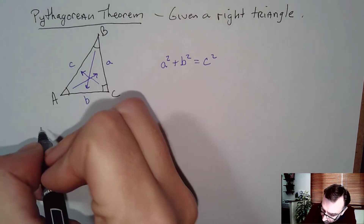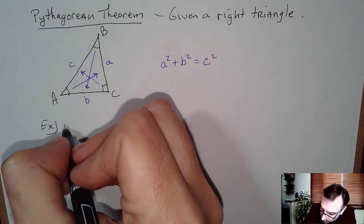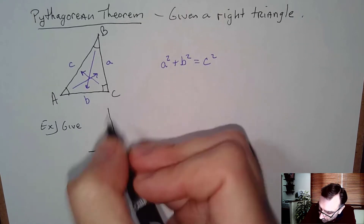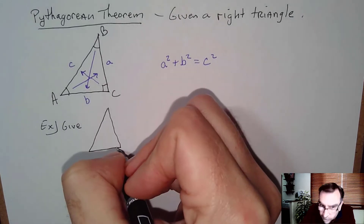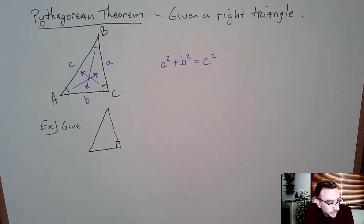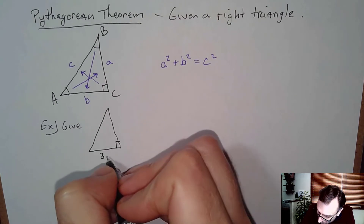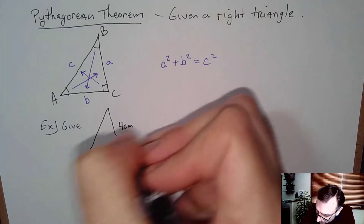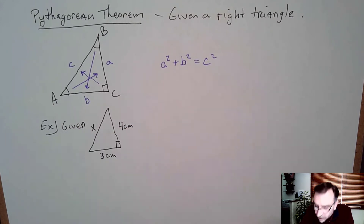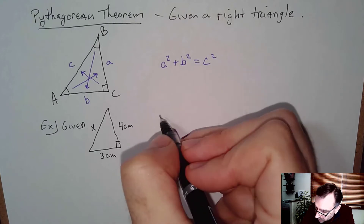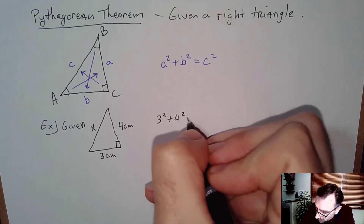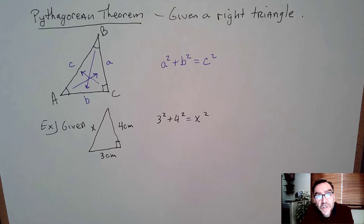Let's do an example. Let's say we were given a right triangle where the base is 3 centimeters and the height is 4 centimeters, and we want to find the hypotenuse. We can apply the Pythagorean Theorem: leg squared plus leg squared equals hypotenuse squared, and then just do the work.